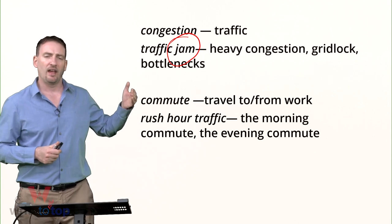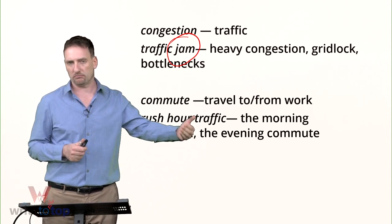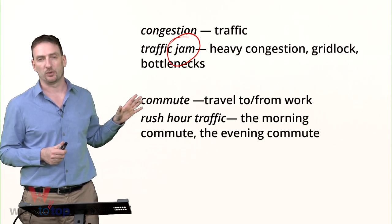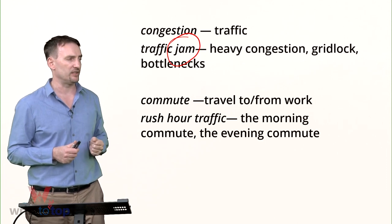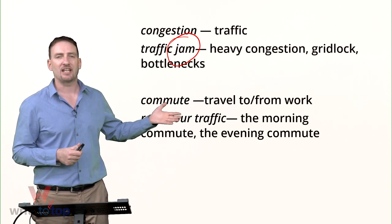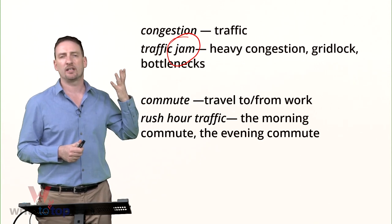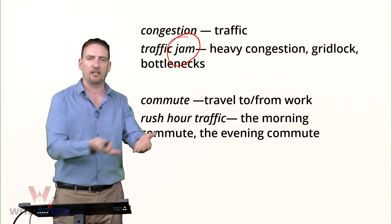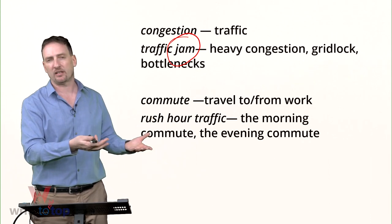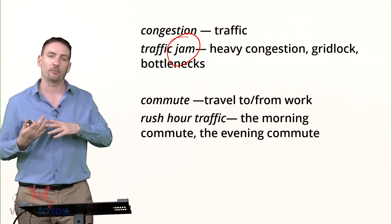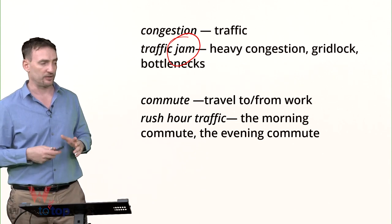Commute. If you're talking about traveling from work to home and back every day on the same route, we call that a commute. If you want to talk about rush hour traffic, you can say the morning commute or the evening commute. The morning commute is understood as the time everyone goes to work, so there's heavy traffic and traffic jams. The evening commute is when people are coming home — heavy traffic, traffic jams. These are extra words you can use for that topic.